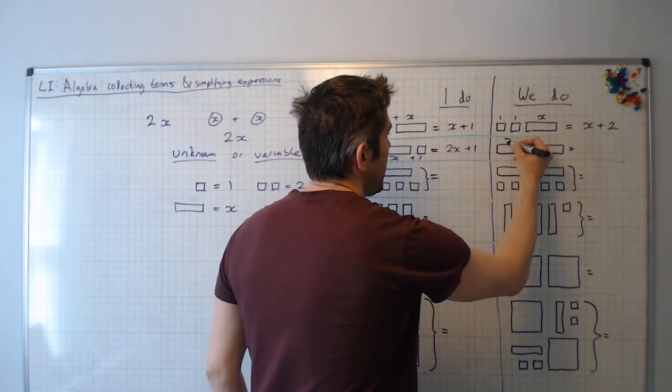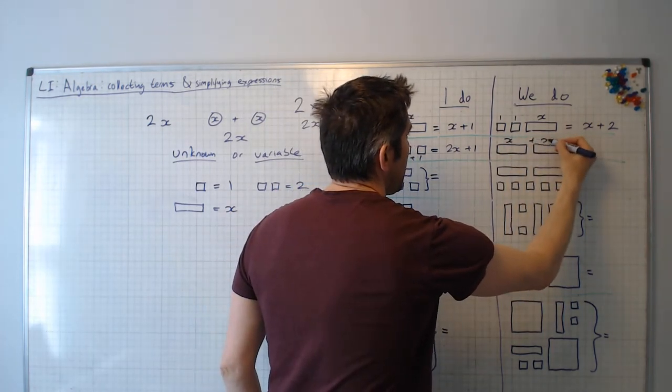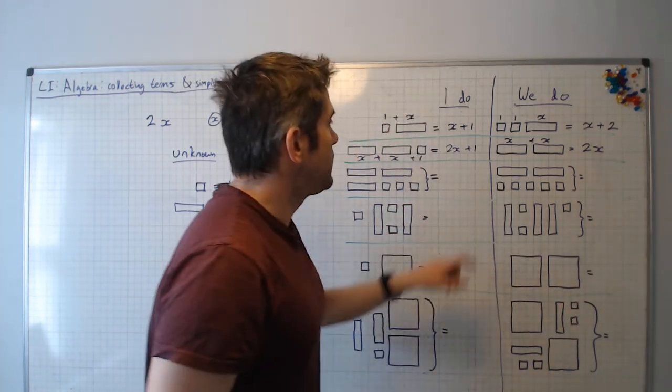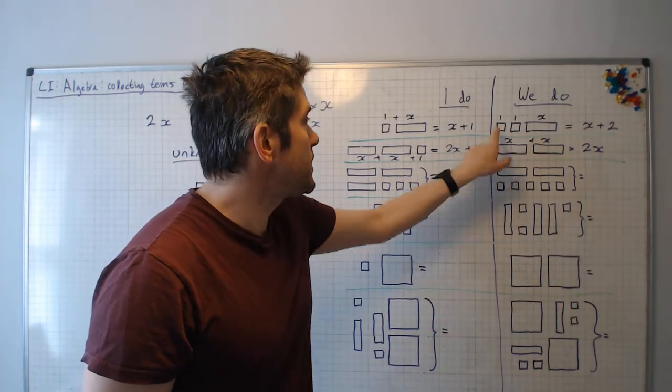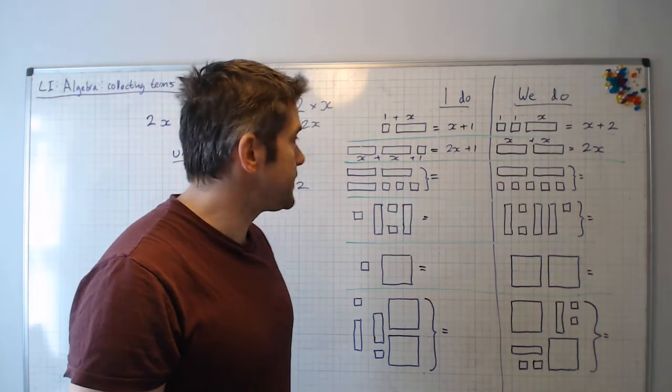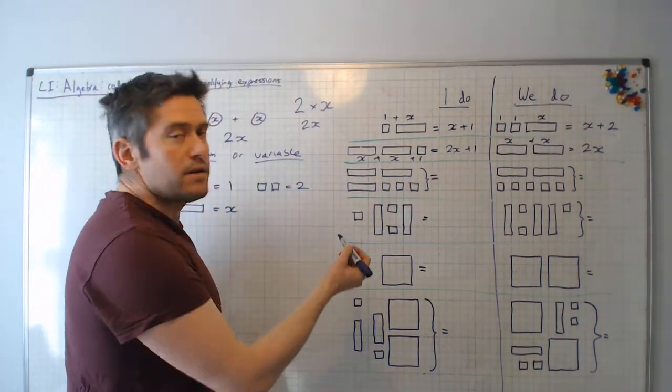Have a go at this one. You should have got x plus x which is 2x. We don't have a constant to go with it. We don't have a number by itself to go with it because there isn't one. We don't see any of those little blocks next to this one.